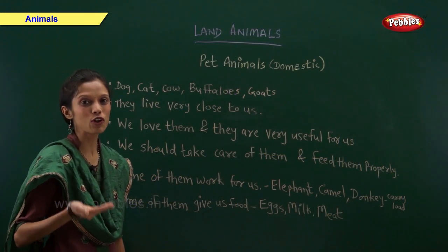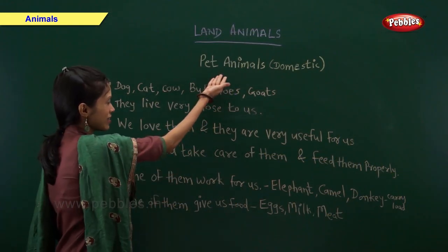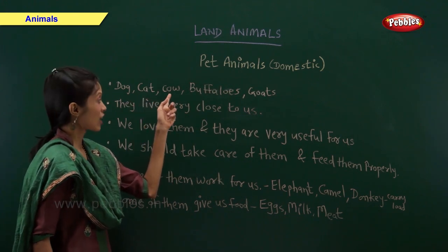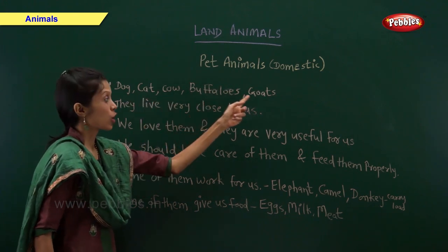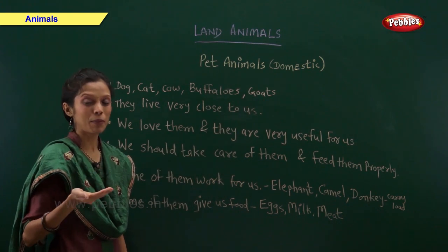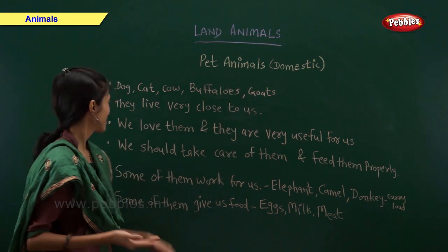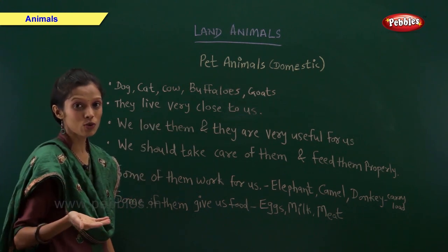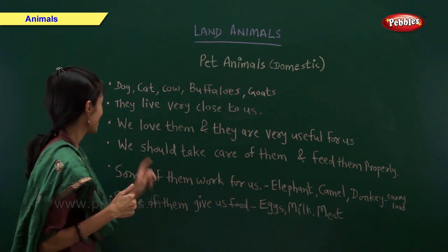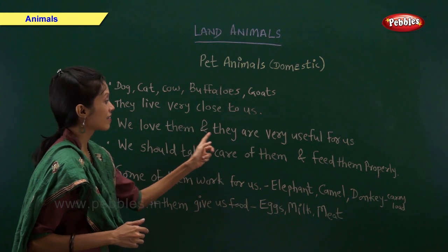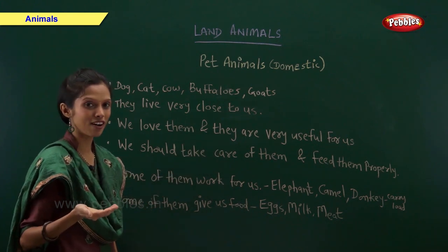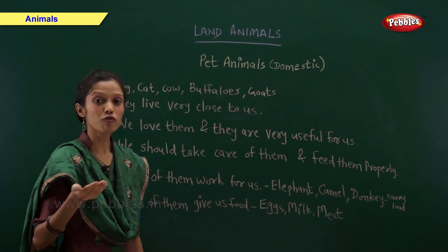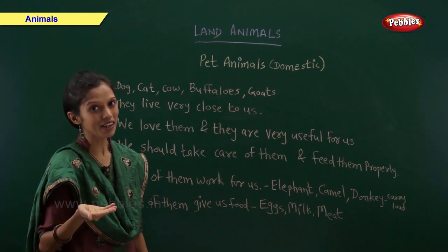Now let us have a look at pet animals. Dog, cat, cow, buffaloes, and goats are examples of pet animals. Pet animals live very close to us. We love them and they are very useful for us. We should take care of them and we should feed them properly.